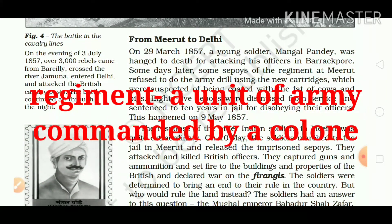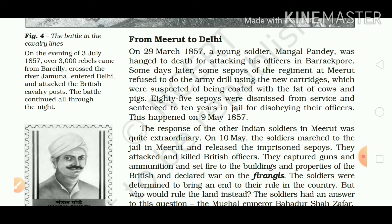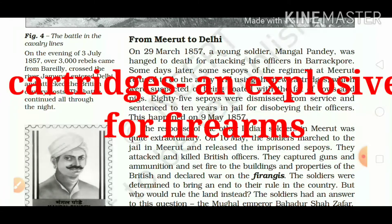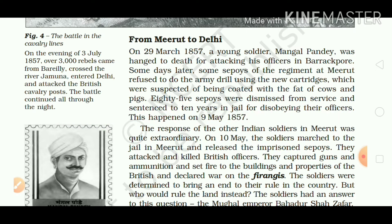On 29 March 1857, a young soldier, Mangal Pandey, was hanged to death for attacking his officers in Barrackpore. Some days later, some sepoys of the regiment at Meerut refused to do the army drill using the new cartridges, which were suspected of being coated with the fat of cows and pigs. Eighty-five sepoys were dismissed from service and sentenced to 10 years in jail for disobeying their officers. That happened on 9 May 1857.